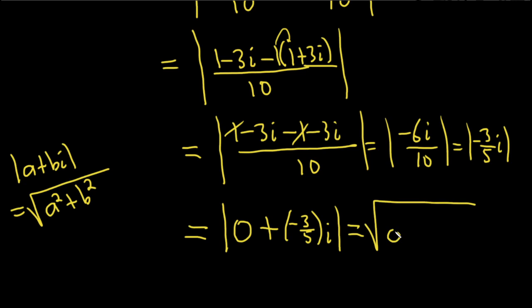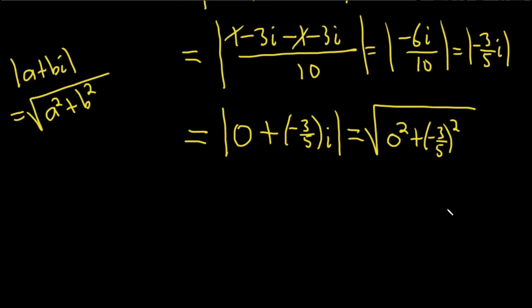And now this is equal to the square root of 0 squared plus negative 3 fifths squared. And so this is equal to the square root of 9 over 25. Right, you squared 3, you squared the 5.